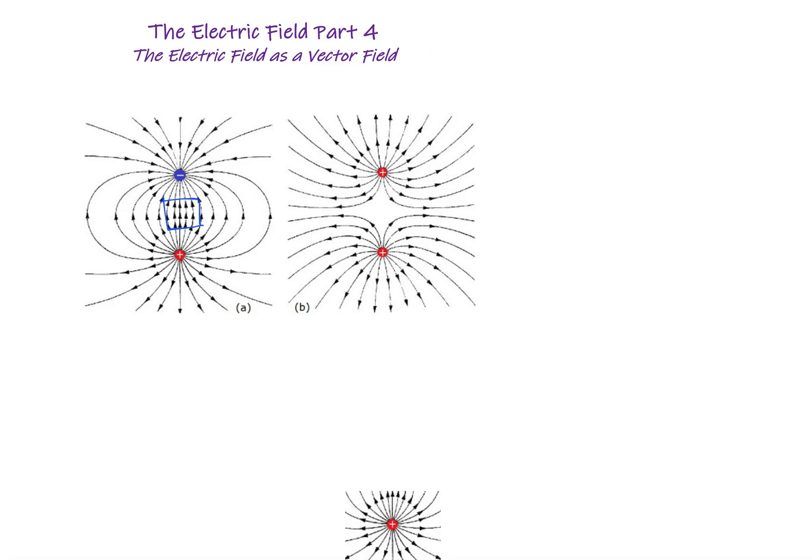In the image on the right we would say that the field is definitely weakest right here because there aren't any lines and so it's actually zero, not even just weak, it's completely zero. And then it's strongest somewhere around here on either side of these two charges.